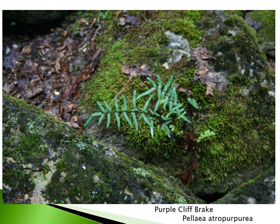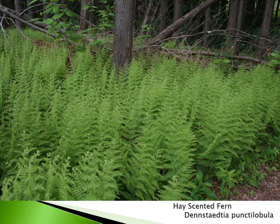Pellaea atropurpurea, or purple cliff break, gets its name because its stipe and rachis are a deep purplish-black color, while the pinna are a beautiful silvery gray-green. This is another species that does quite well in full sun, growing in rock crevices and tolerating very rough conditions. I've had this plant growing in soil between rocks where it really thrives, but it loves to creep upon rocks, getting its moisture from mosses growing around it. A great accent plant for your rock garden.